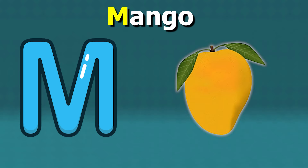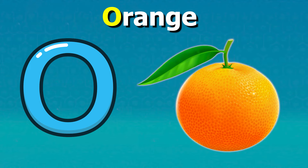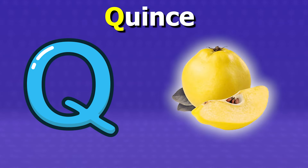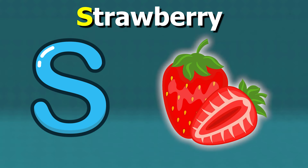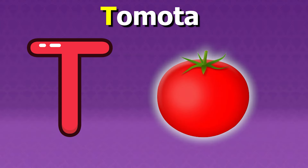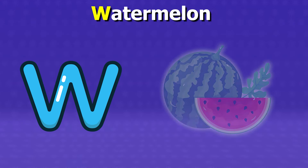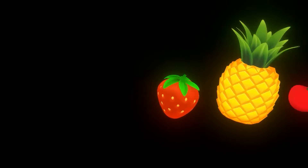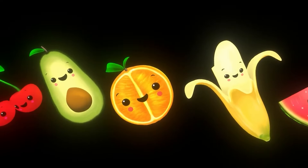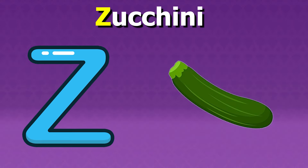M for mangoes, N for nashi, O for oranges, P for pears, Q for quince, R for roseberries, S for strawberries, T for tomato, U for ugly fruit, V for vanilla, W for watermelon, X for ximenia, Y for yuzu, Z for zucchini.